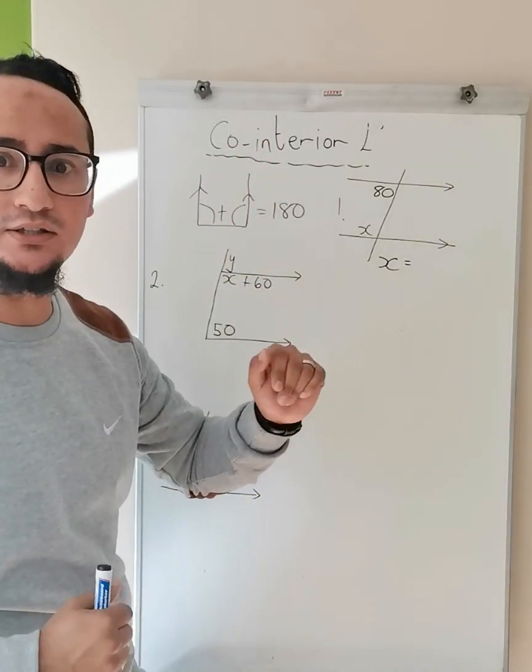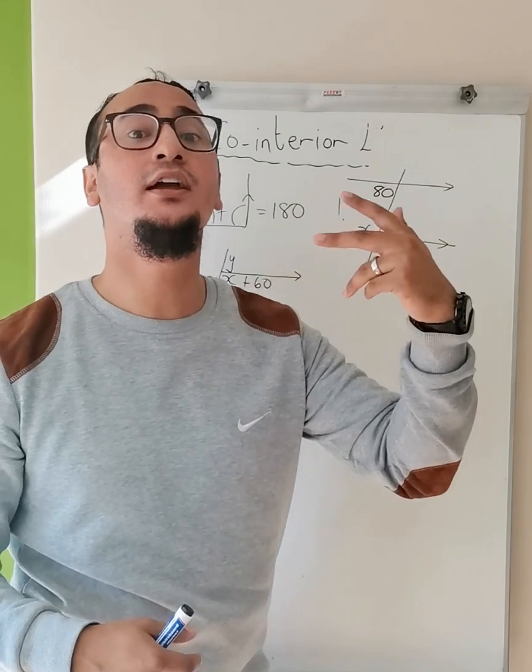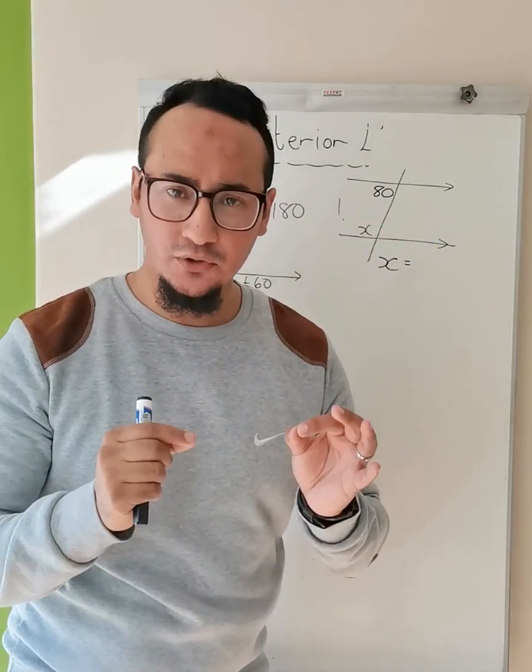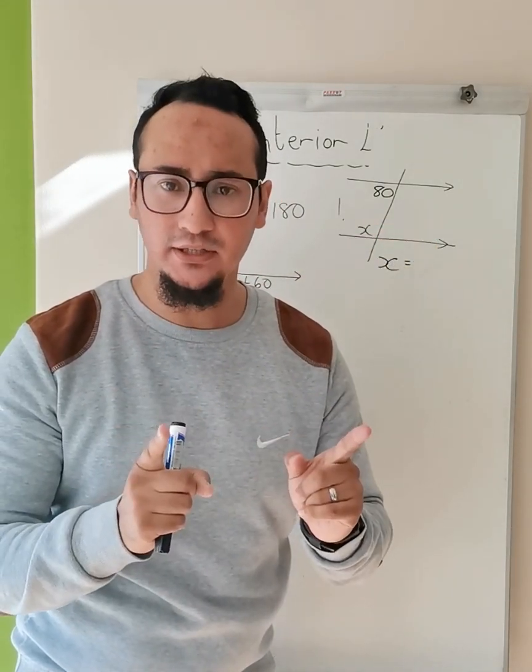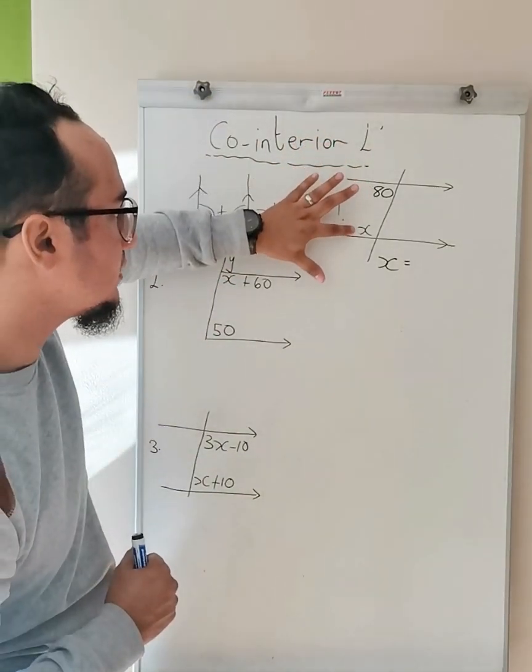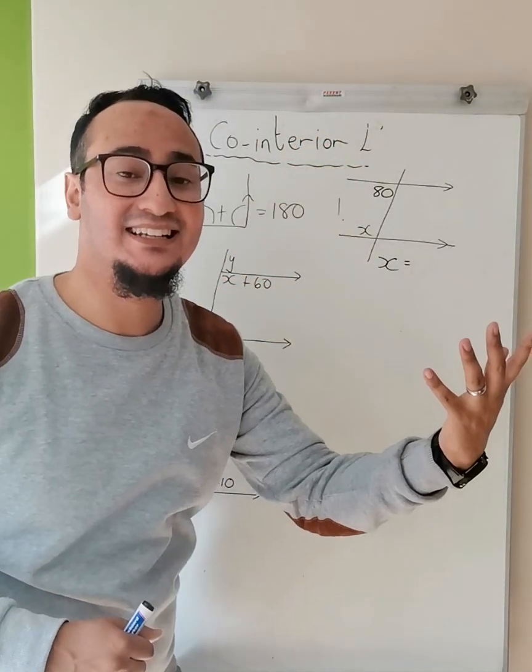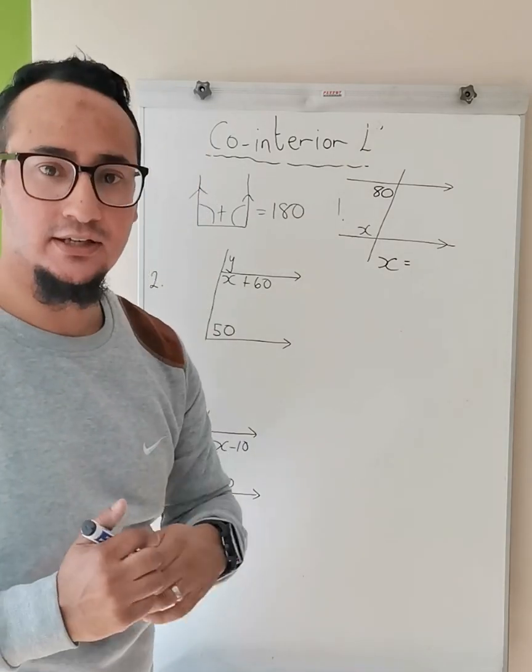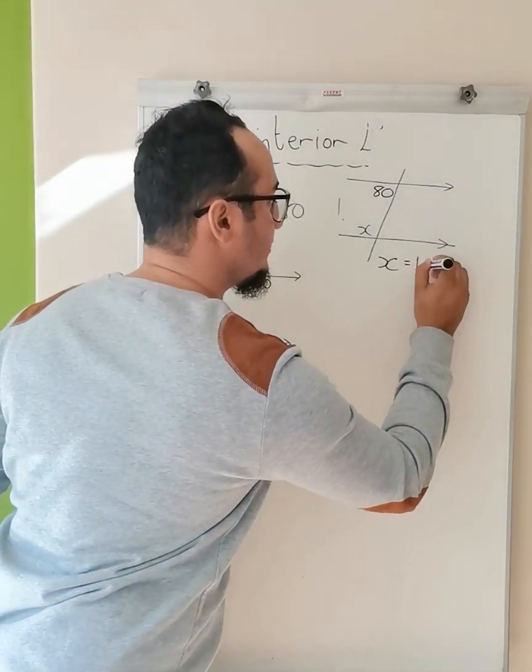The first one, very simple. No matter how they look, as long as you know that they are supplementary to one another. So 80 plus what will give me 180 degrees? That is obviously going to be 100. So what's your reason? Co-interior angles equal to 180 degrees—they are supplementary.